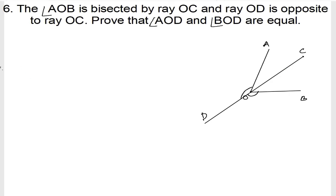So solution. Given: angle AOB is bisected by ray OC. So given what is given? Given that angle AOC is equal to angle BOC. These two angles should be equal because they are bisected, right. And OD is opposite to OC.